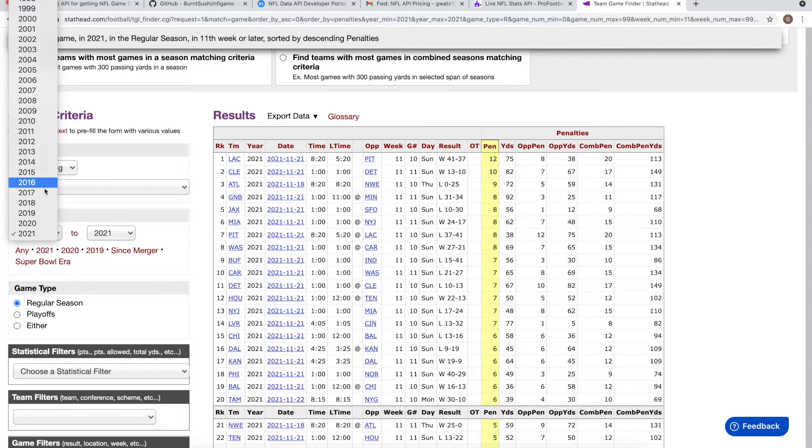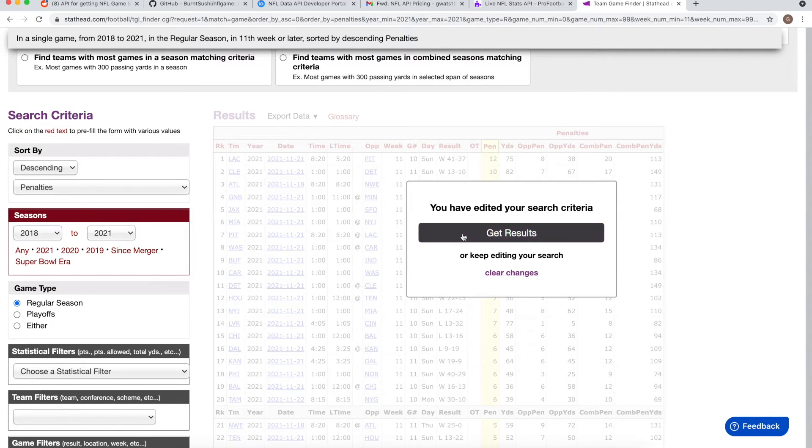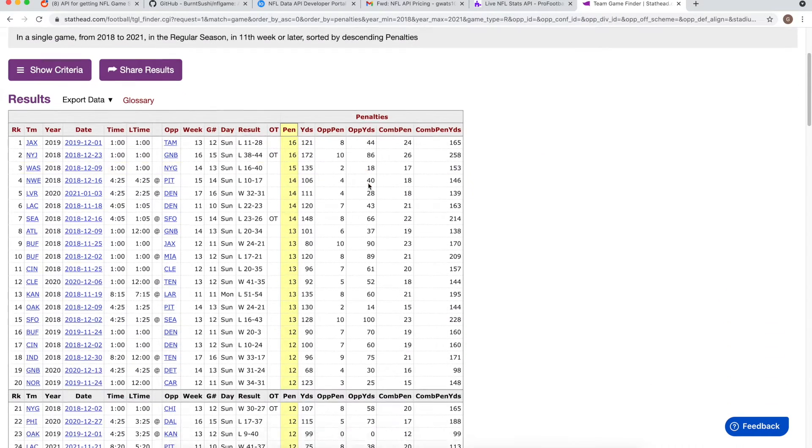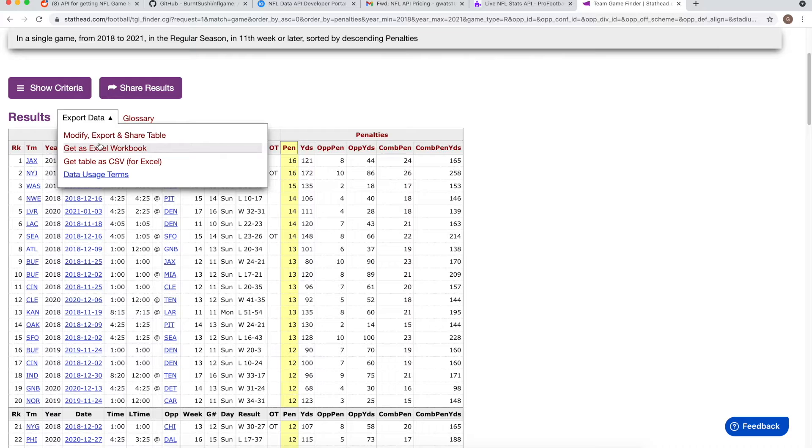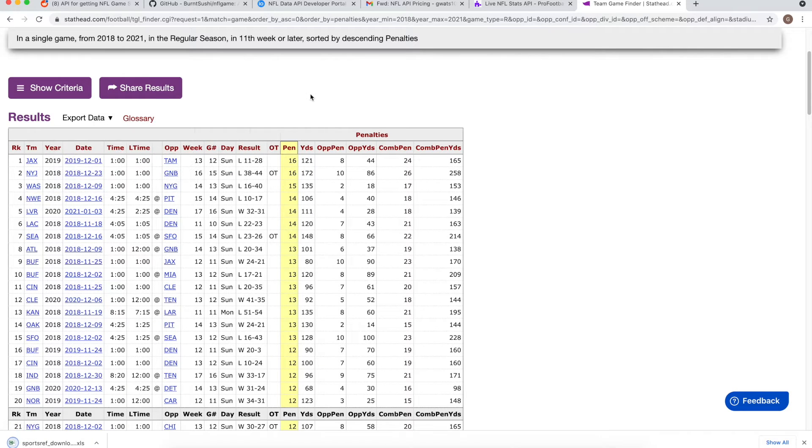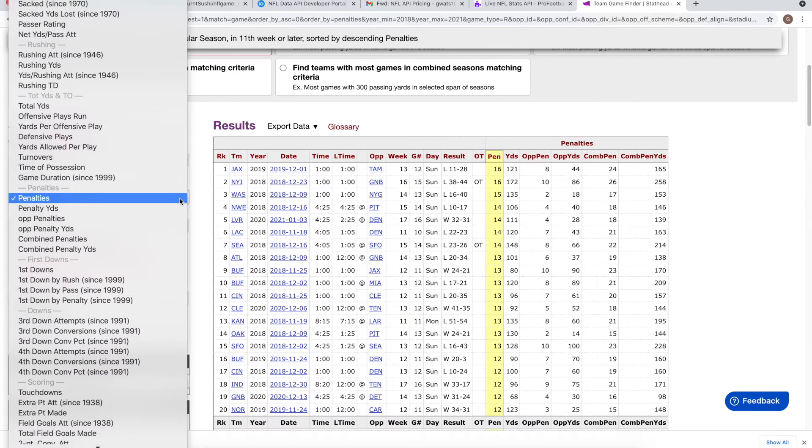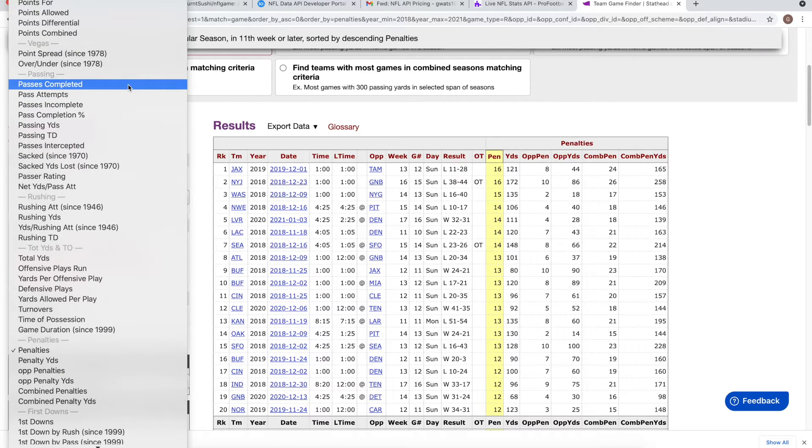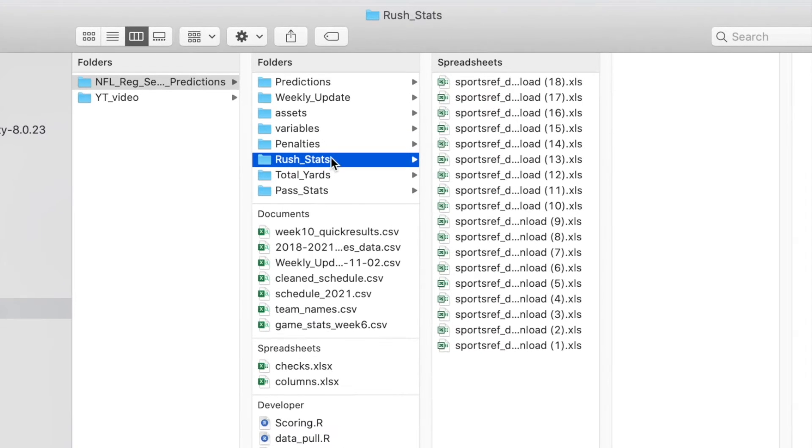I downloaded all NFL game data from 2018 to 2021, which is three full seasons of game data and all the games in 2021 up to that point. I pulled all the data they had for penalties, total yards, rush stats, and passing stats and put them all into separate folders.